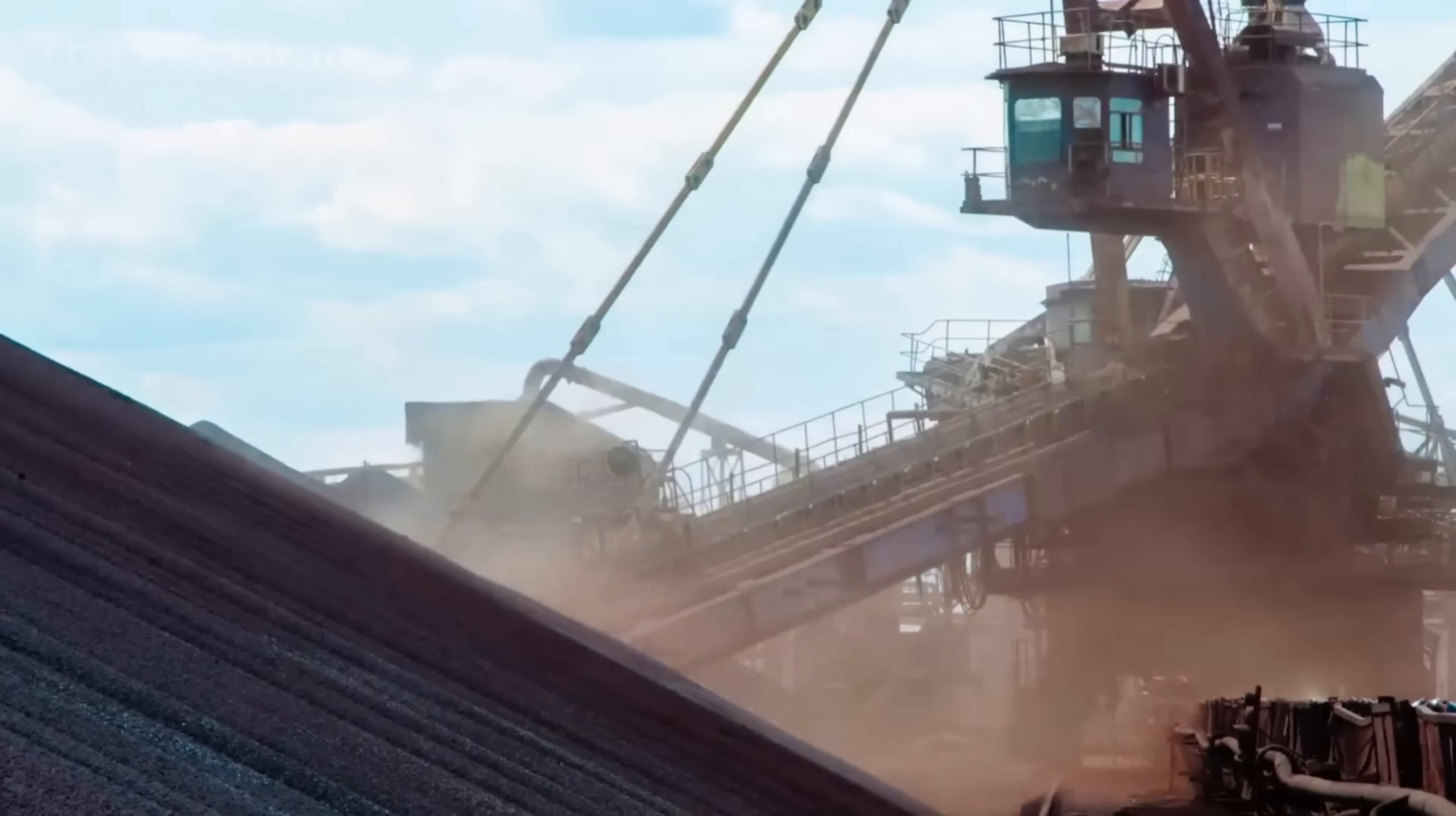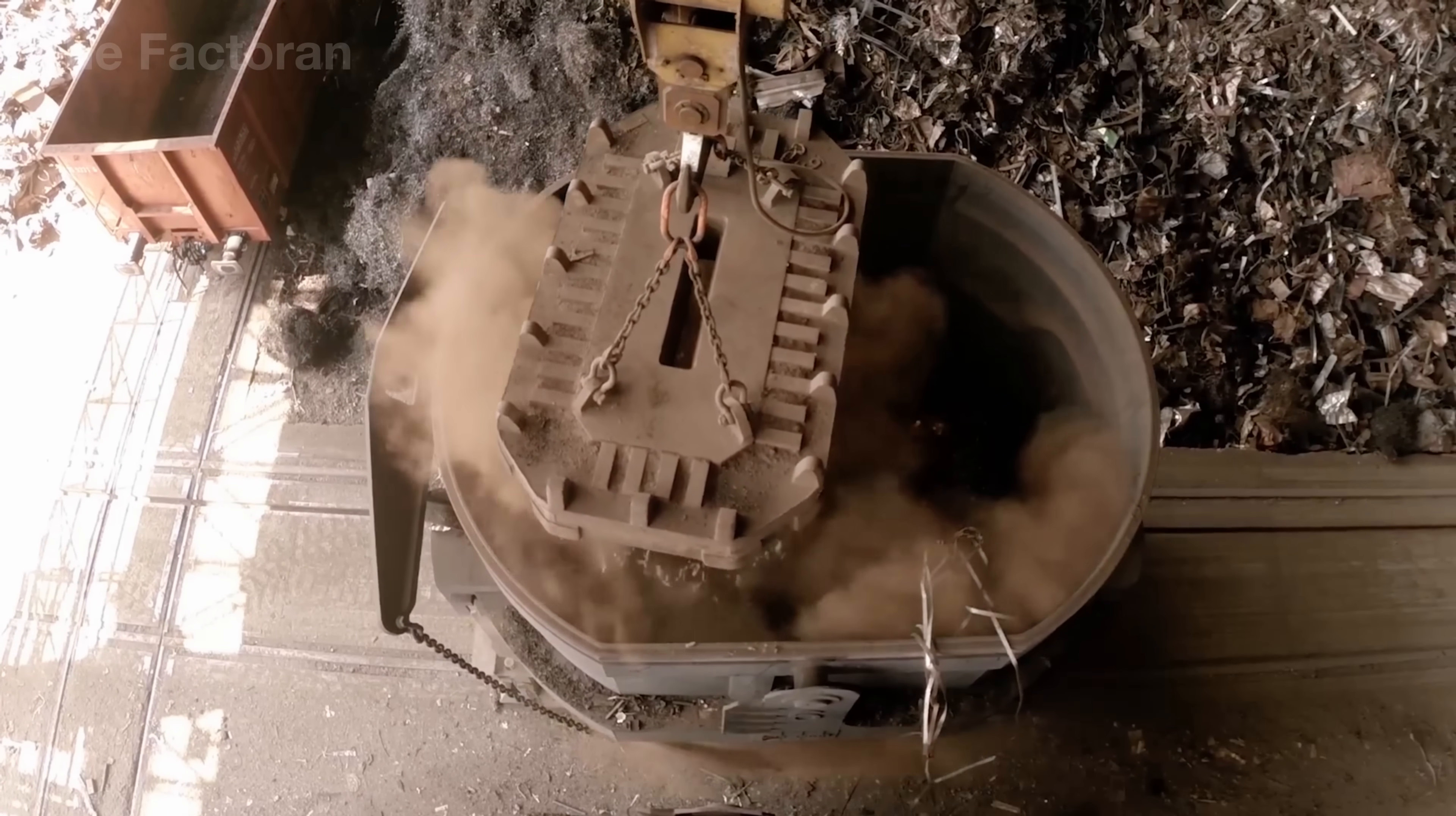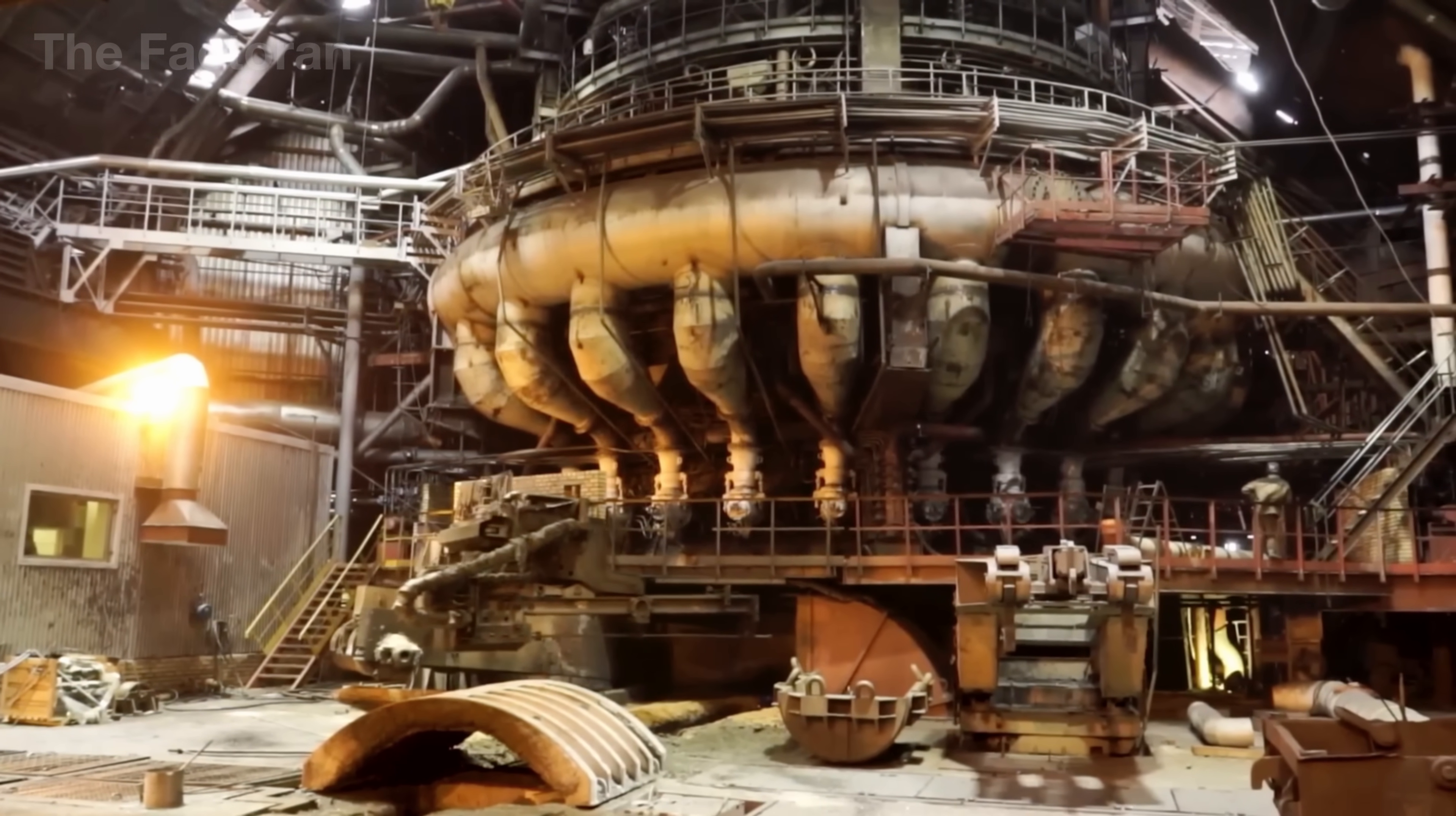When the ore trains arrive at the steelworks, the smelting process begins. Thousands of tons of iron ore, mixed with recycled scrap metal, are fed into an enormous electric arc furnace as tall as a multi-story building. Inside, giant graphite electrodes channel immense currents, generating heat that exceeds 2,900 degrees, hot enough to melt solid metal into a swirling mass that glows like volcanic lava.